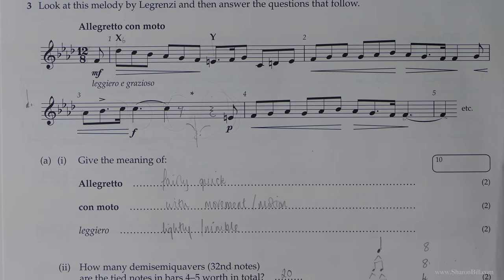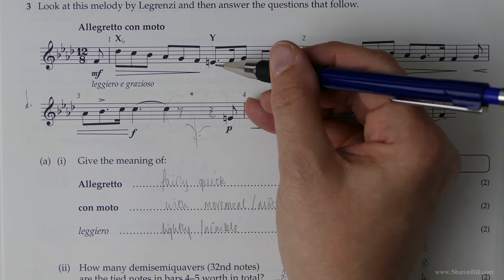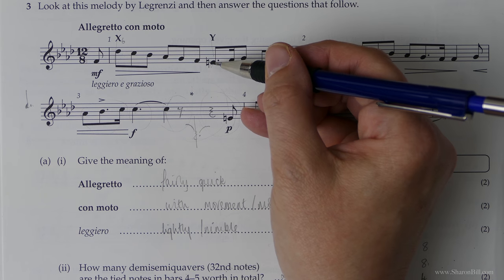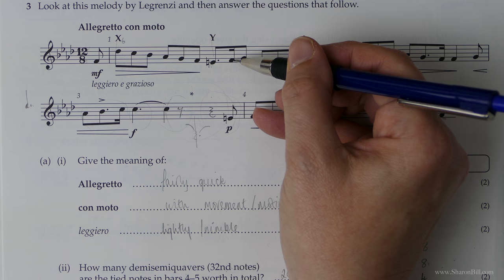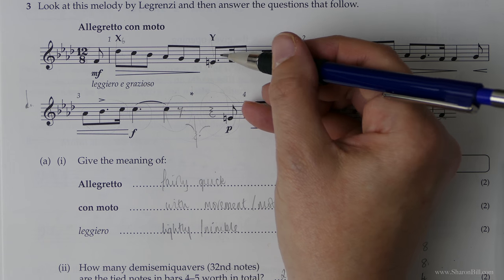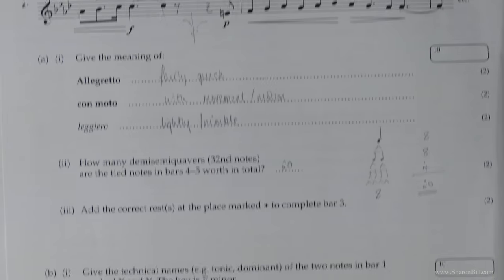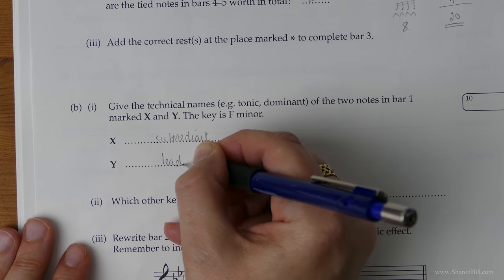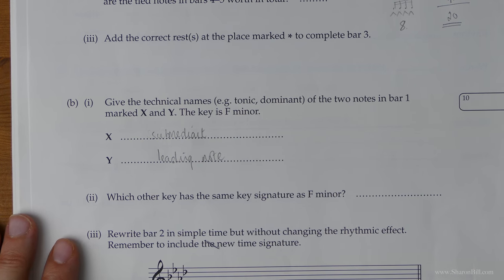And then looking at the next one. Now there's a clue that tells us straight away we've got an accidental. So I'm guessing that will be the raised seventh. However, just to be sure, this is note E. If F is note eight or one, E is seventh. So we are right in thinking that's the raised seventh. And so that will be the leading note.